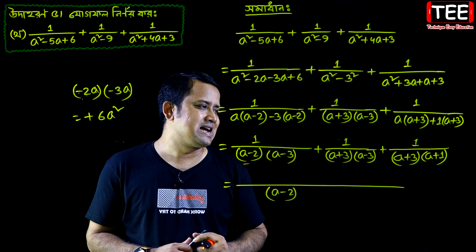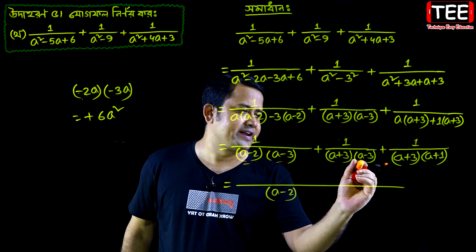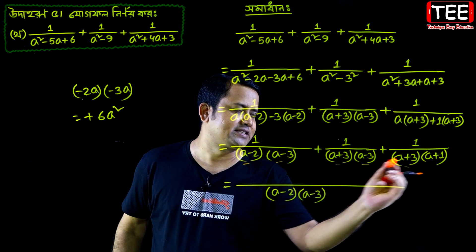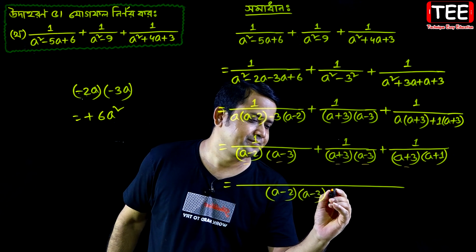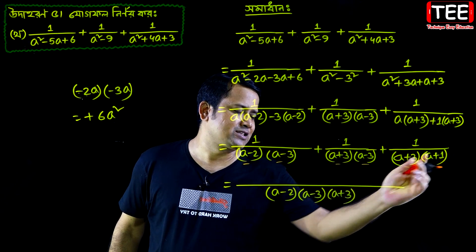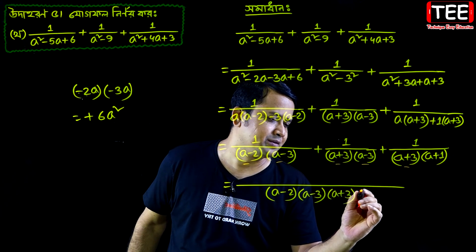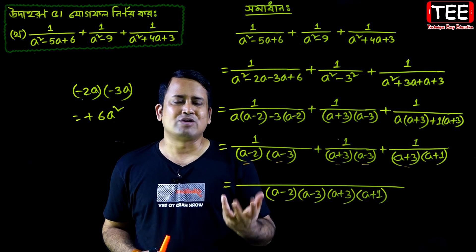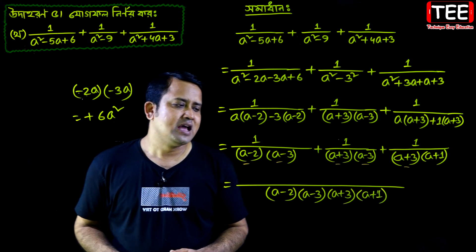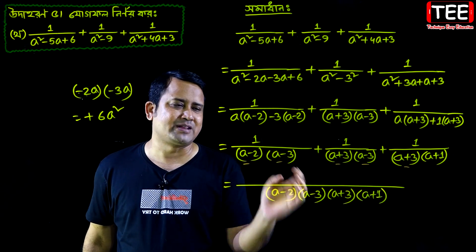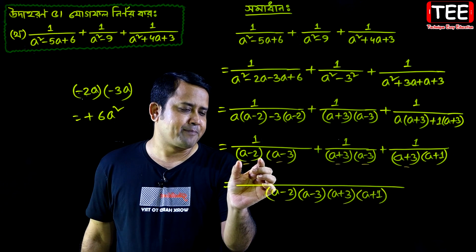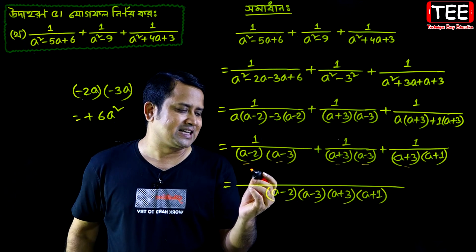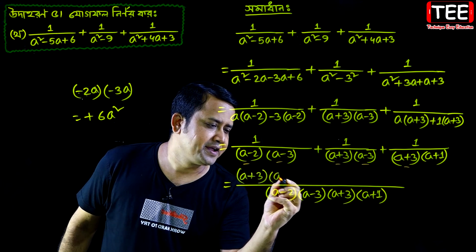A minus 3, a minus 3. So eta minus 2, a minus 2, a minus 3, and eta minus 3 into a plus 1.